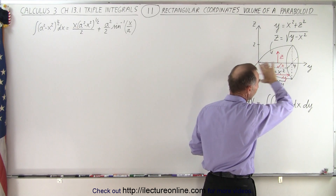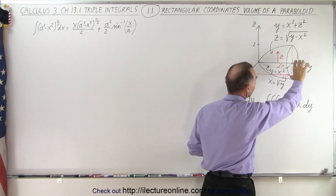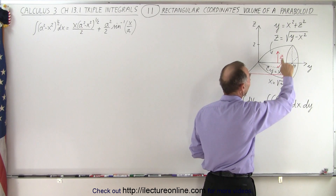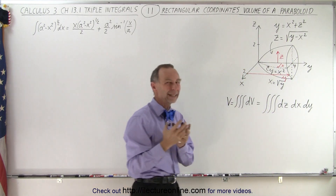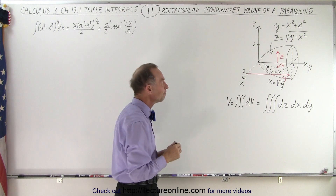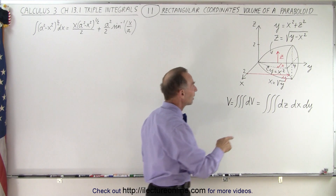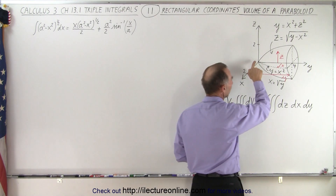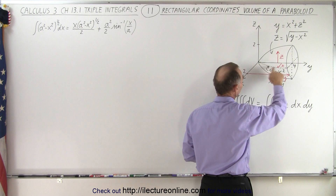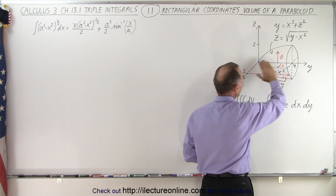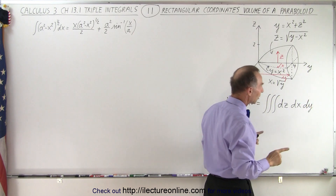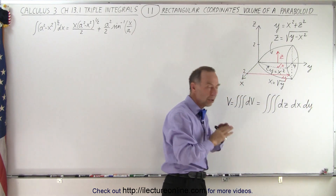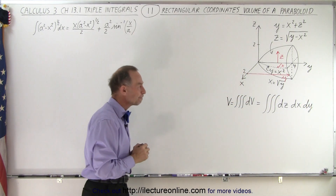Notice it's directed towards the y direction, the y-axis, and it looks like it's circular in shape — not elliptical. Also notice that if I draw a line along the edge of that surface in the xy plane, I have the relationship y equals x squared, which gives us that parabolic shape in the xy plane.